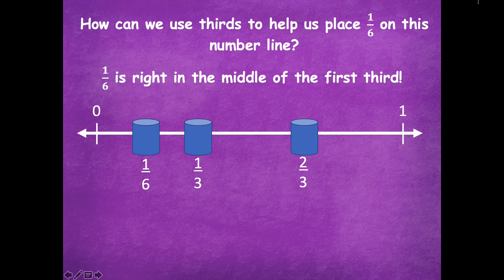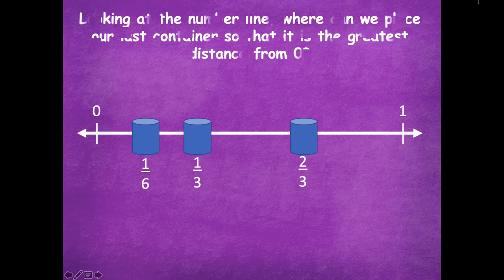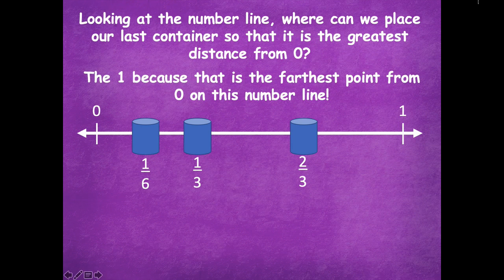I'm going to put a container there too. Looking at the number line, where can we place our last container so it's the greatest distance from zero? We can put it on one, because that's the furthest point from zero on the number line.